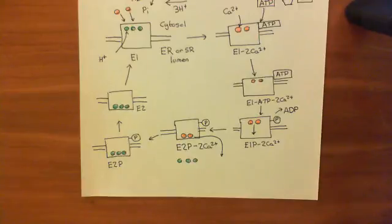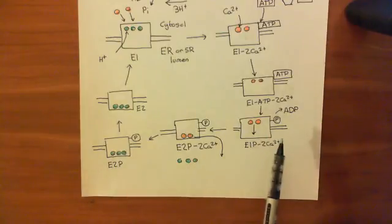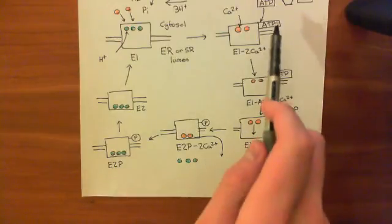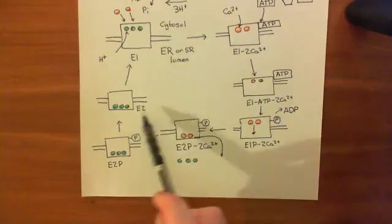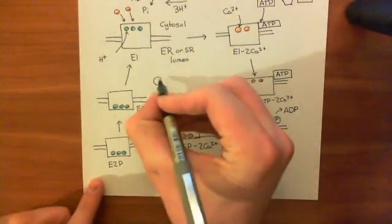That is how SERCA swaps three protons being moved out of the lumen of the endoplasmic reticulum or sarcoplasmic reticulum for the movement of two calcium ions into that lumen. It's coupled to the hydrolysis of ATP into ADP, and then the phosphate group comes off.